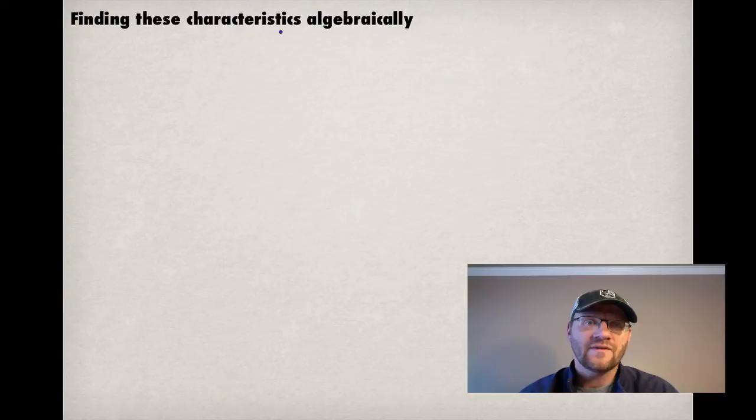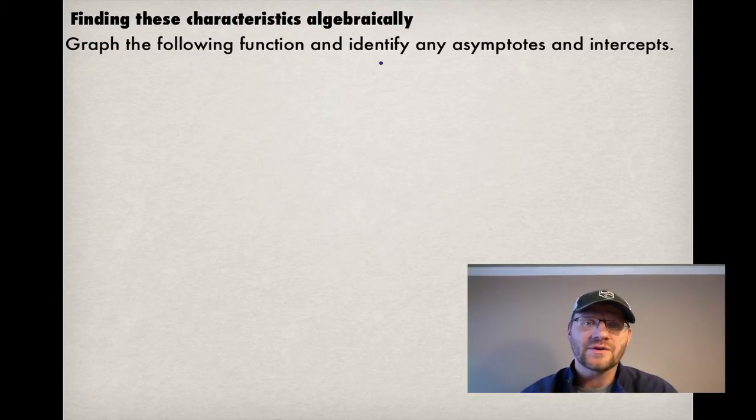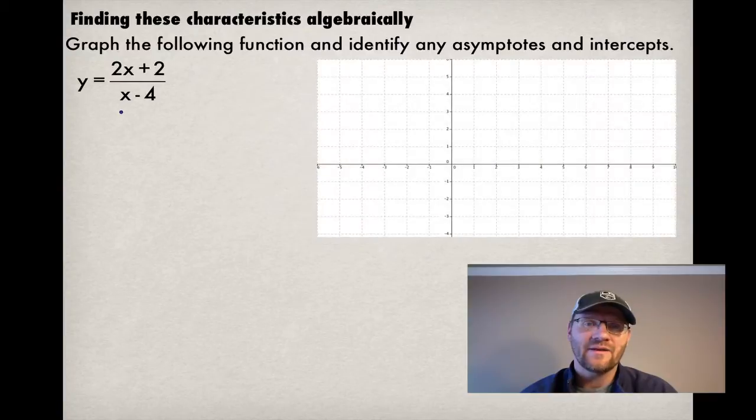So we're going to find all these characteristics algebraically now, and we're going to do that with an example. It says, graph the following function and identify any asymptotes and intercepts. And so our function is y equals 2x plus 2, all divided by x minus 4. And here's the graph that we're going to graph it on.